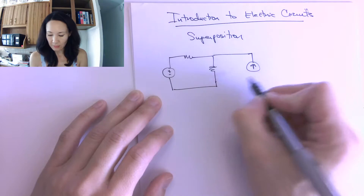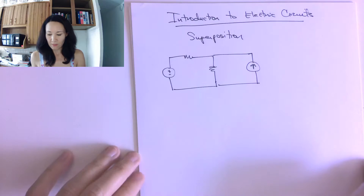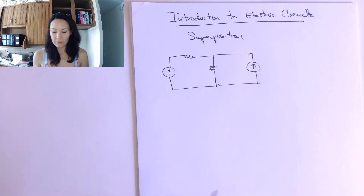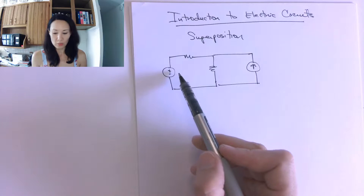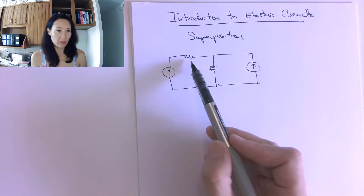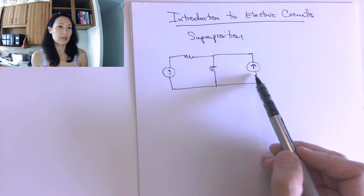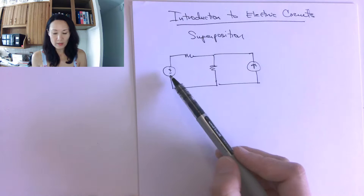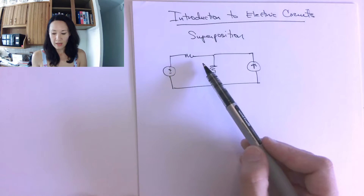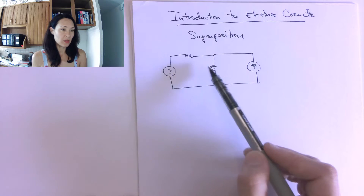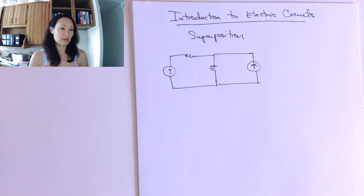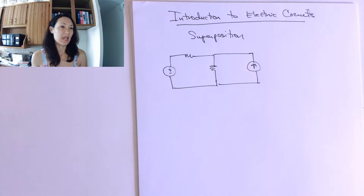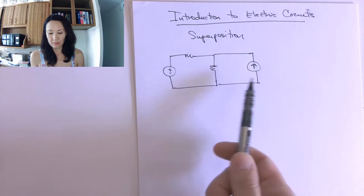Here is an example of a circuit that we might use superposition to solve. The concept of superposition is basically that this source is going to make a contribution to the power supplied to this resistor and this resistor, and this source is going to make a contribution to the power supplied to these resistors. So if we consider one source at a time, we can add both contributions to get the total power delivered to these resistors. Superposition boils down to just basically adding — we're going to add both contributions from these two sources.